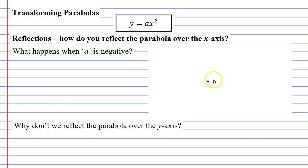So we'll go back to our notes here. It says what happens when a is negative, meaning we're putting a minus sign in front of the a. And we'll say that it reflects our parabola over the x-axis.